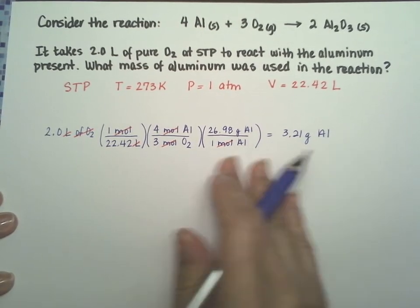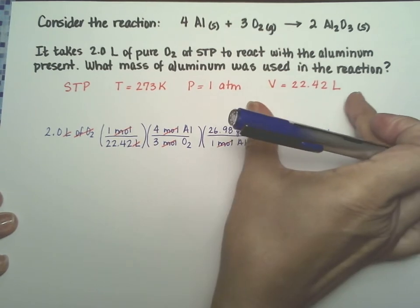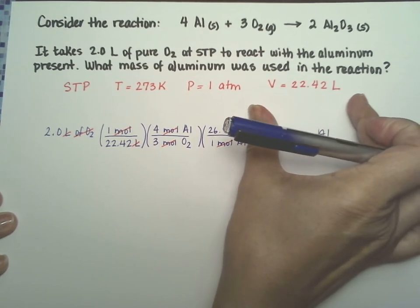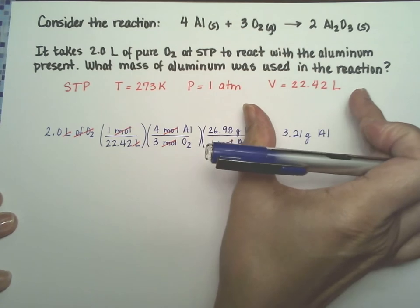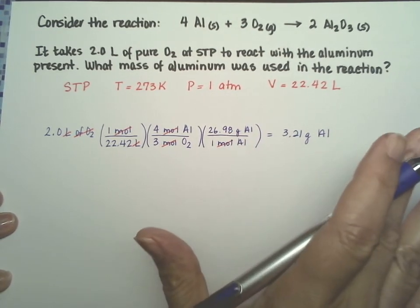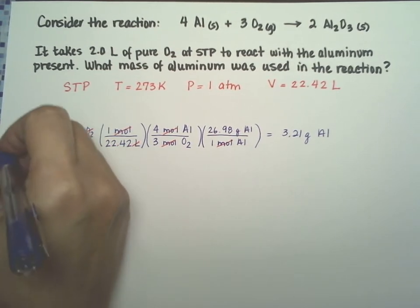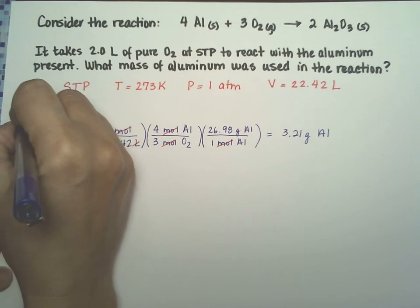Okay, this is the first way that you could solve this problem and it's based on whether you remember that a mole of gas under standard temperature and pressure will actually occupy 22.42 liters. If you don't remember that, then let's use the ideal gas equation. So this is way number one.